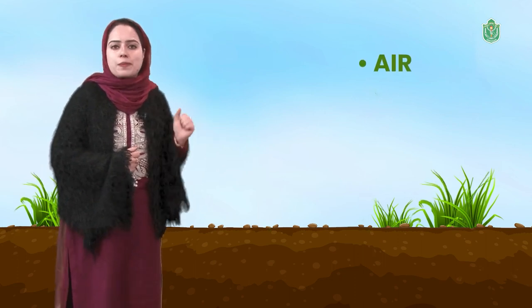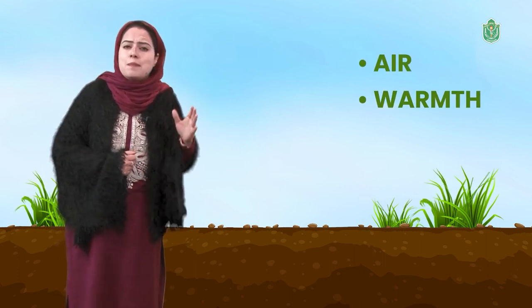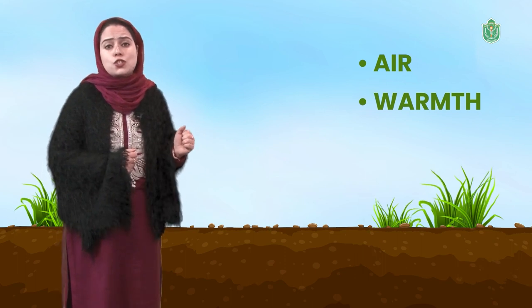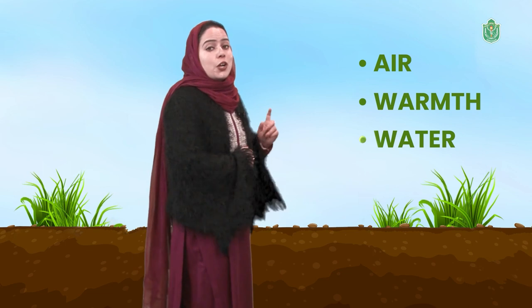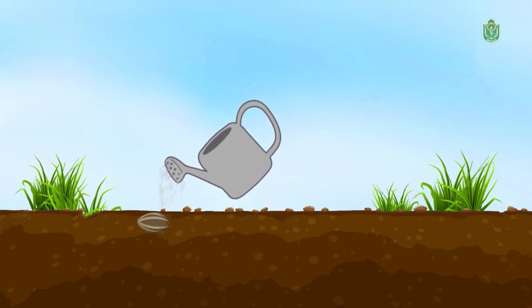Number one: air — a seed needs air to germinate. Warmth — there must be some heat for seeds to germinate properly. Water — seeds need moisture to germinate. When we take a fully developed dry seed and provide it with necessary conditions — air, warmth, and moisture — it will start to develop.